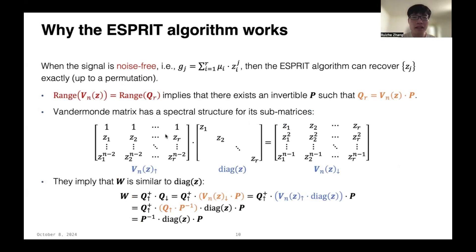Then, it implies that there exists an invertible matrix P such that Q can be written as Vandermonde matrix V_n times P. Moreover, the Vandermonde matrix has a special structure for its sub-matrices. We can similarly use the first n-1 rows to define a sub-matrix V_{n,up}, and the last n-1 rows to define a sub-matrix V_{n,down}. Then, V_{n,up} and V_{n,down} satisfy the following equation: V_{n,up} times a diagonal matrix of z equals to V_{n,down}. Then, using these two equations, we can easily prove that the W matrix is similar to the diagonal matrix of the location vector z, which means the eigenvalues of W are exactly z_1 to z_r.